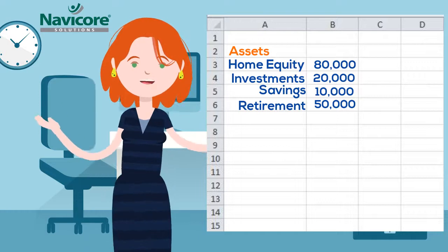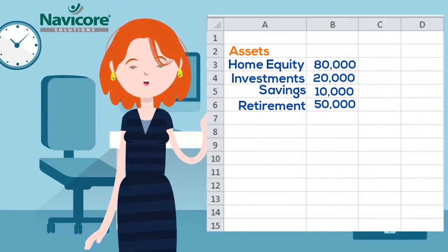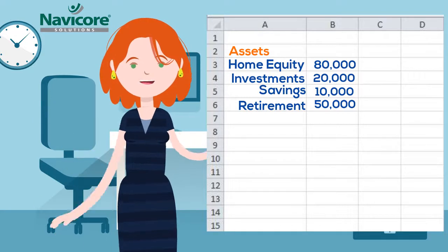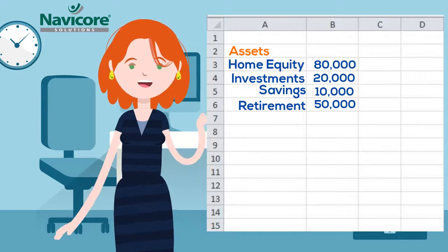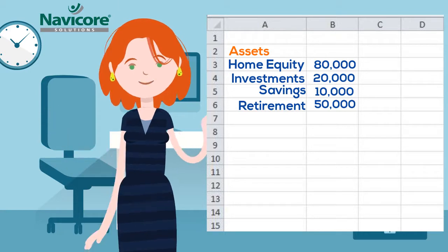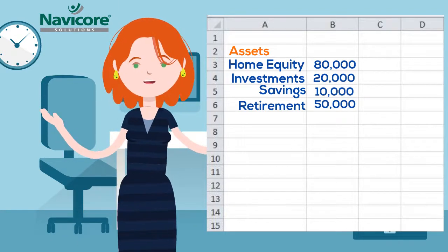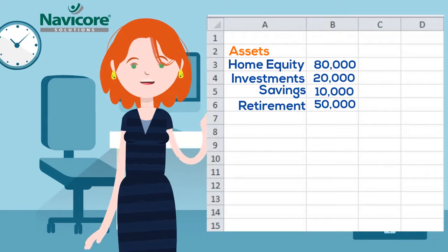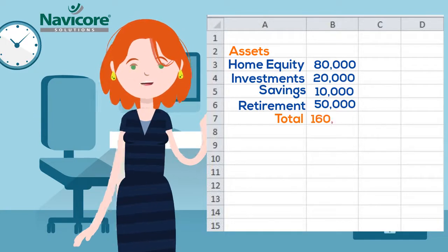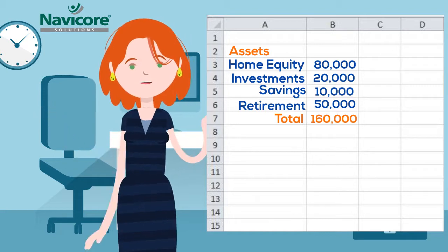You can include other items that have value, like a collection. Cars can either be included or excluded depending on the value of your car, given how fast they can depreciate. It may not be worth it to include your car as an asset if it's an older model. After you've listed all your assets, add up the value — this is your total worth, but that's only part of the picture.